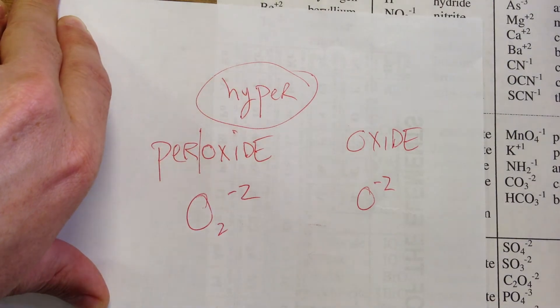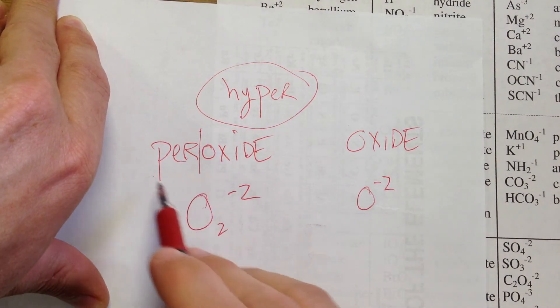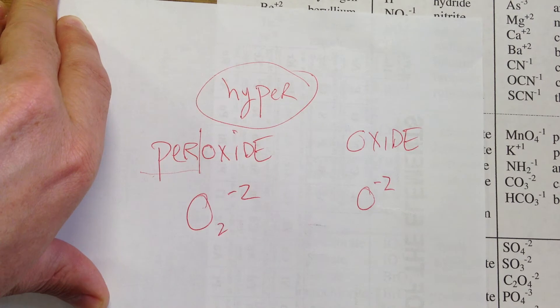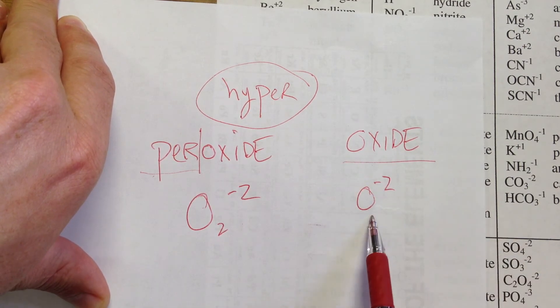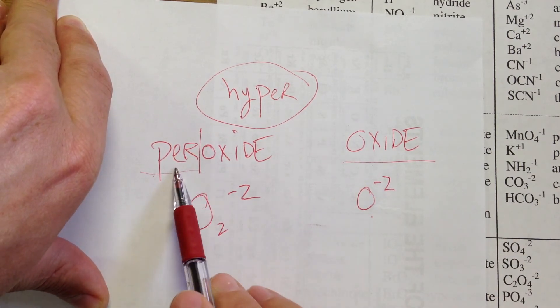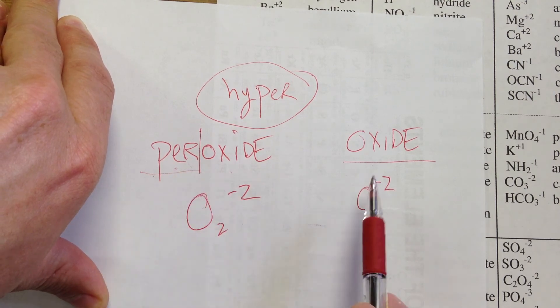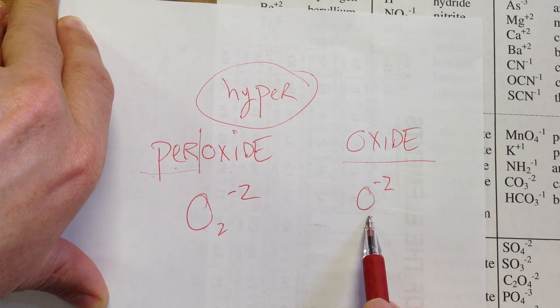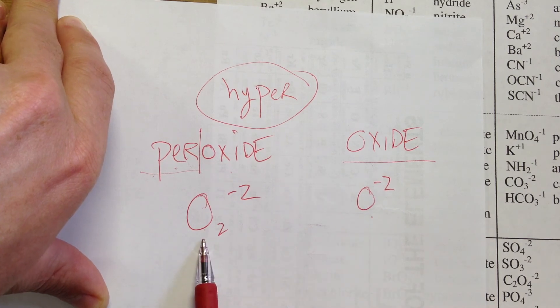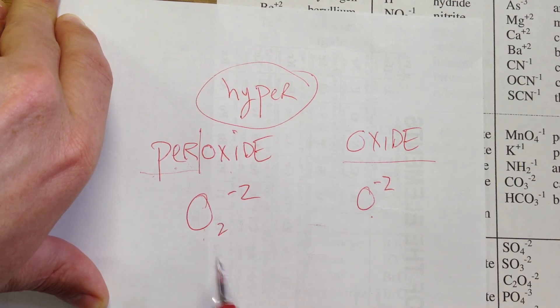And so whenever you think of it, and actually this is always true, a lot of these ions, whenever you get that per prefix, that means they have more. Well, more of what? What they have more of is oxygen, always. So if oxide is O, then something with more oxide that's got too much oxygen would have to have another one, and so instead of just O, it's actually O2. And with these pers, the charge does not ever change. So that's a little trick that can help you remember what that means.